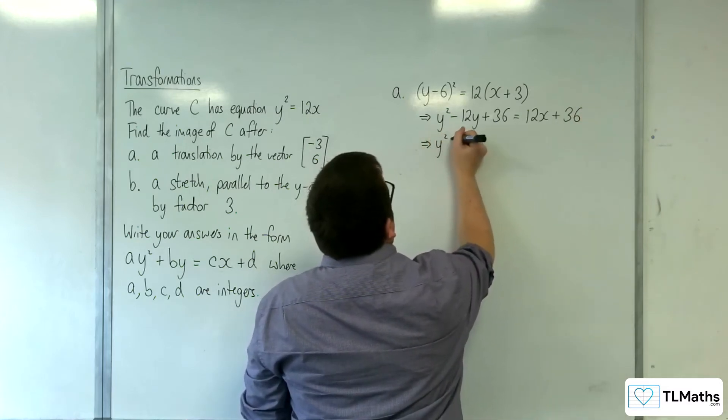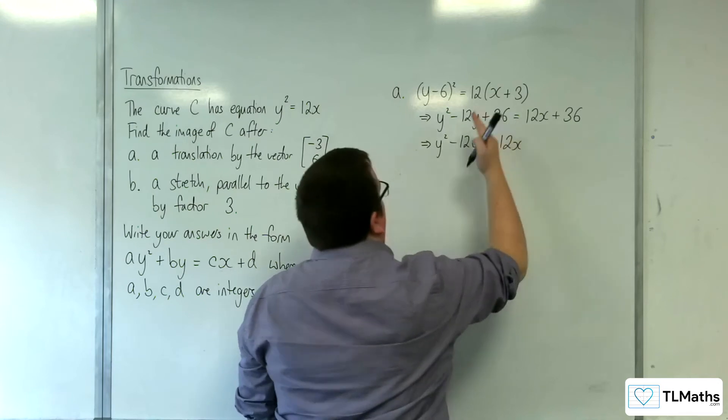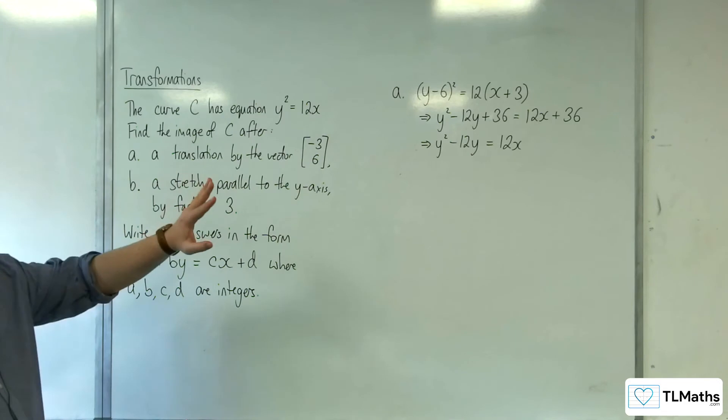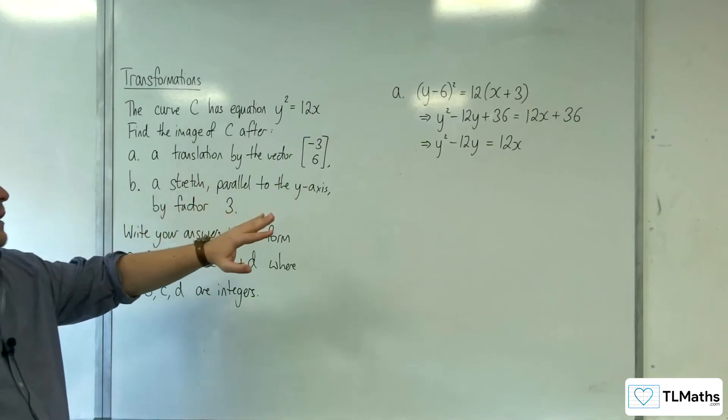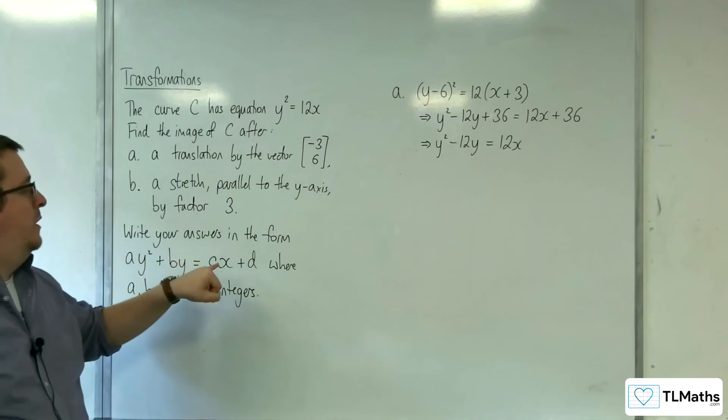So y² - 12y = 12x, subtracting 36 from both sides. That is in the form we want. So a = 1, b = -12, c = 12, d = 0.